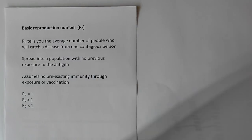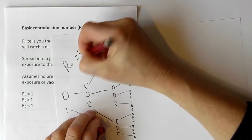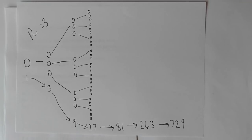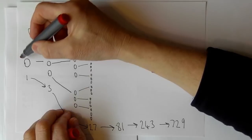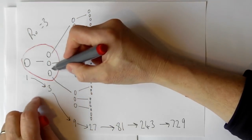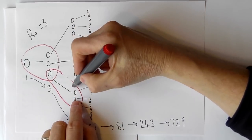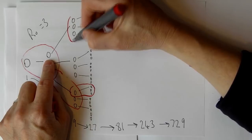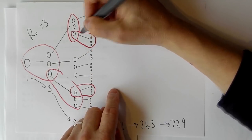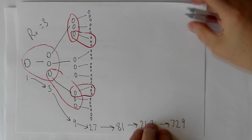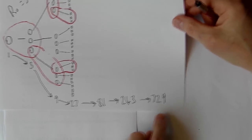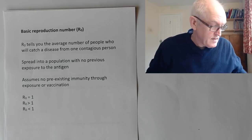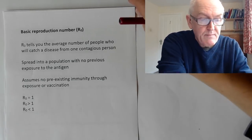If the R0 is three, then on average three people are infected per infected person. One infected person infects three new people, each of those infects three, and so on. The numbers of growth are much greater: 9, 27, 81, 243, 729 — a much greater rate of increase. So we see this R0 value is absolutely critical to understanding how quickly a disease can spread through a population.